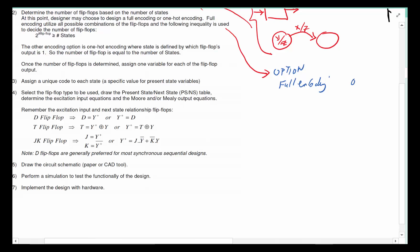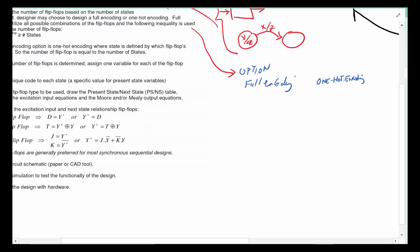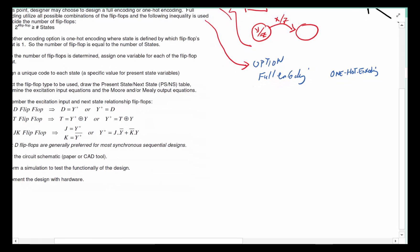One is called full encoding and the other one is called one-hot encoding.